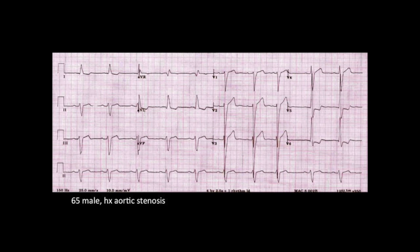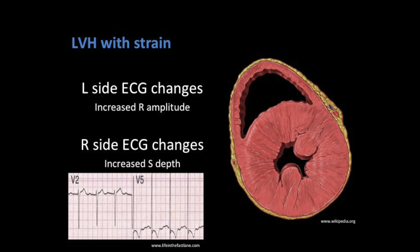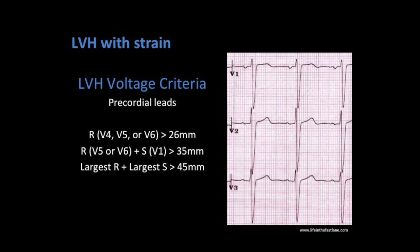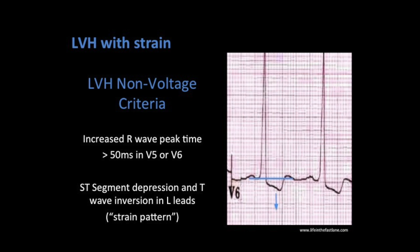This ECG is a 65-year-old male with a history of aortic stenosis. The changes here are indicative of LVH with strain pattern. In LVH, the left ventricle becomes large. The ECG shows evidence of this with left side changes showing increased R-amplitude and right side changes showing increased S-depth. There are multiple voltage criteria which can be used in the limb leads and precordial leads to determine if an ECG is showing LVH — I don't think it's important to put all these to memory, but definitely have them handy. There are also non-voltage criteria including an increased R-wave peak time and the strain pattern, which is ST segment depression and T-wave inversion in the left-sided leads. This can often be mistaken for ischemic reciprocal changes.